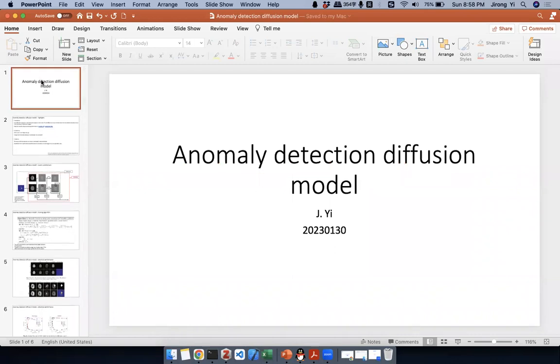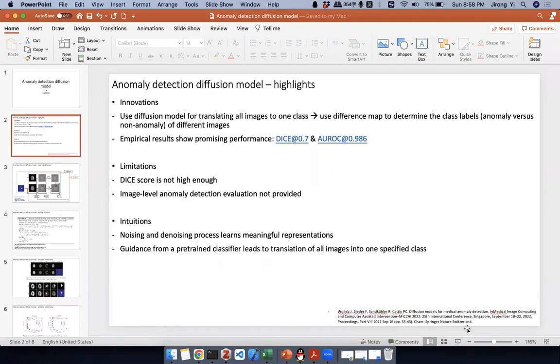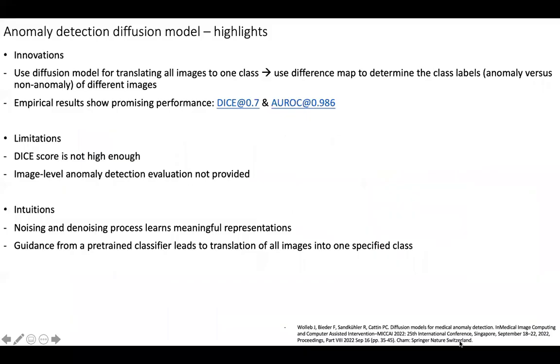Okay, I think we can get started. Today we will talk about anomaly detection using diffusion model. So here's an overview of this approach. First of all, innovations: there are basically two bullet points here. The first thing is it uses a diffusion model for translating all the images into one class. You can see this anomaly detection